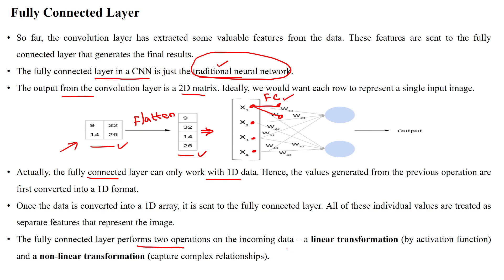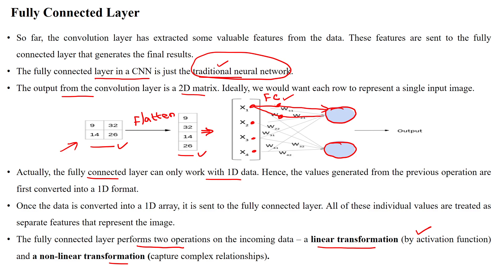The fully connected layer performs two types of operations on this information: linear transformation and nonlinear transformation. Any activation function can be used to extract the input and generate the output. Each and every neuron in the output layer, depending on our application — whether binary class classification or multi-class classification — receives this input from the fully connected layer.